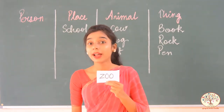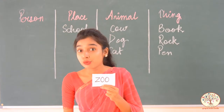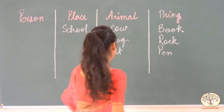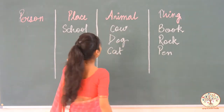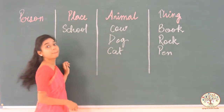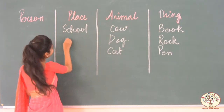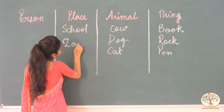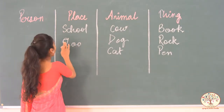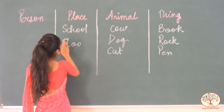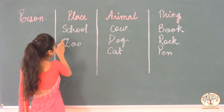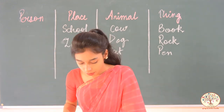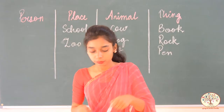What I have? Zoo. Zoo is a name of a place. Yes — where we can see many of the animals, right?